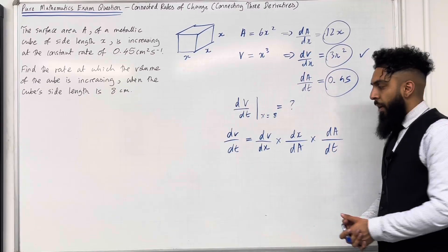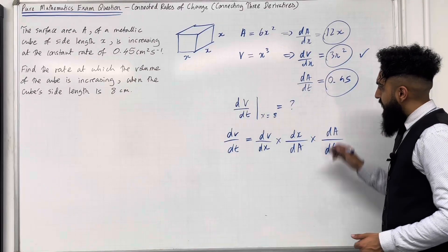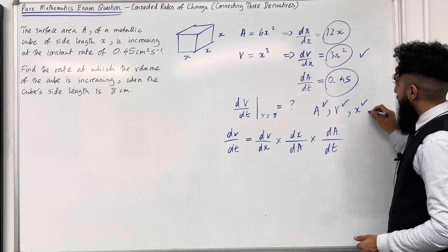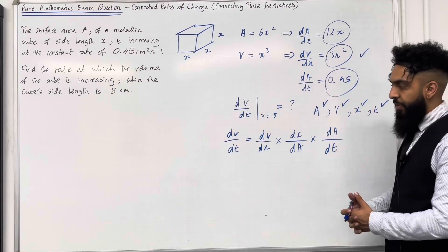So the left is equal to the right. Perfect. So we've used up the variable A, the variable V, the variable X, and the variable T. It has been used up.